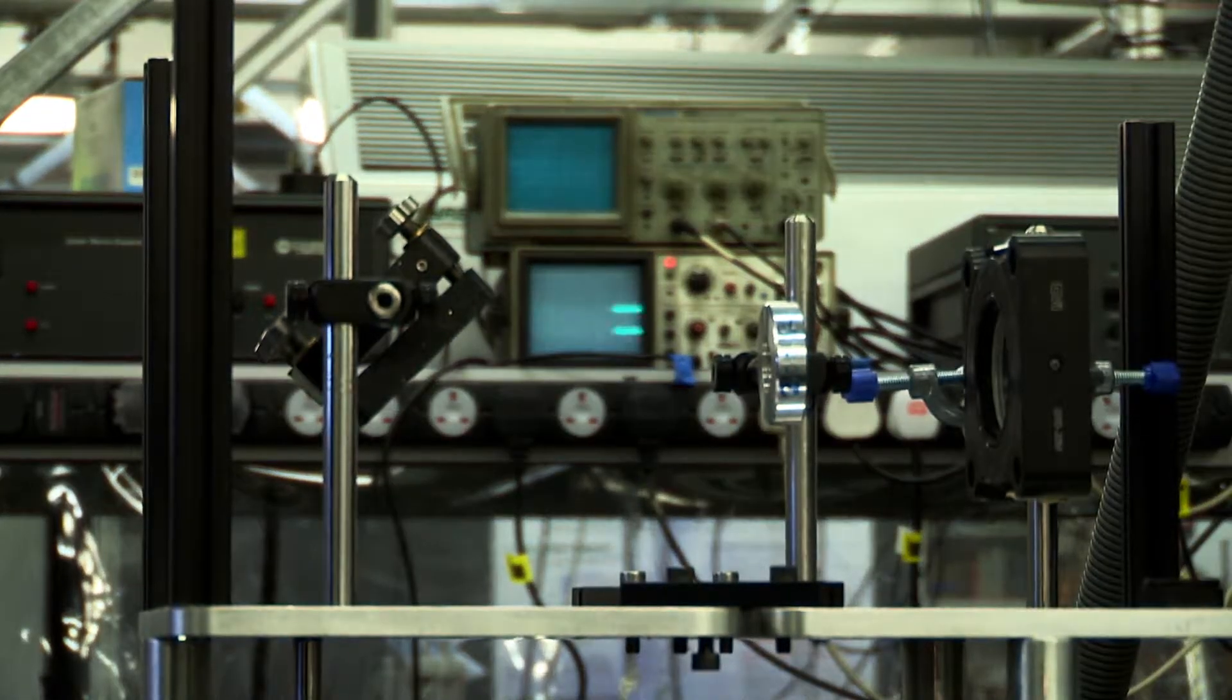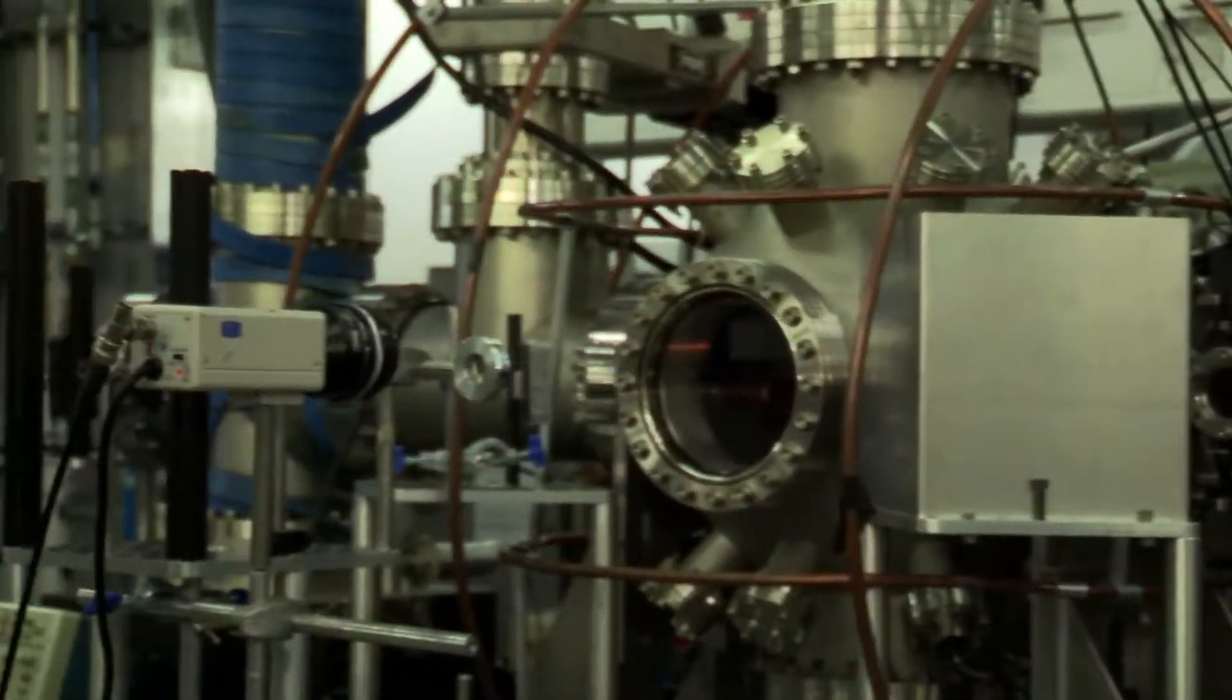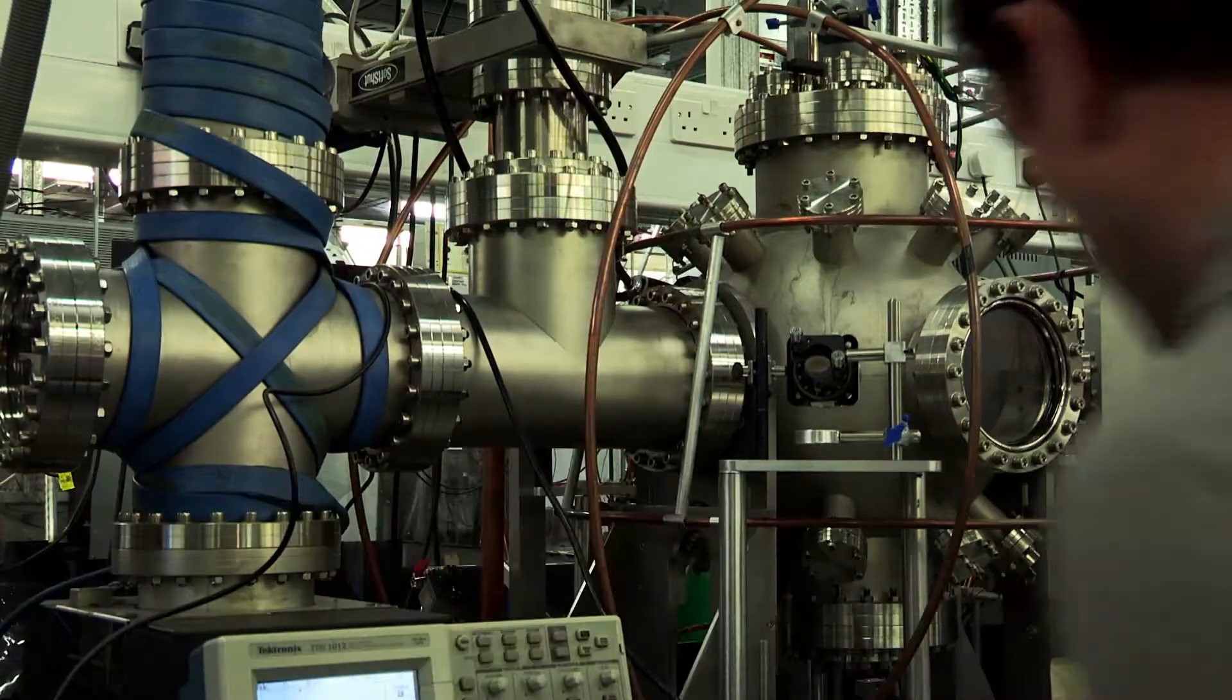So inside this the potassium atoms are probably the coldest things in Manchester. They are about 200 micro Kelvin so it's minus 273 degrees centigrade.